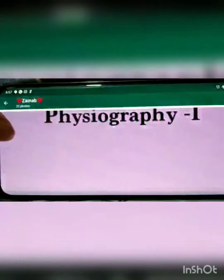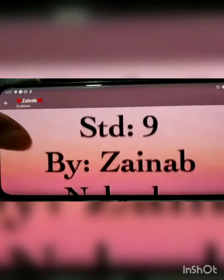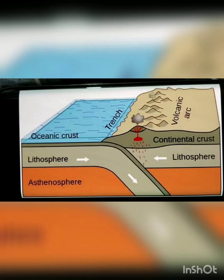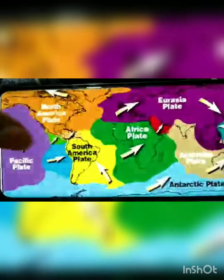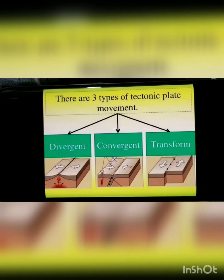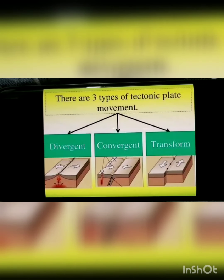The orange part shown is the asthenosphere at the bottom, and it is made up of material over which the crust of the earth floats. There are three types of tectonic plate movements. When the plates are moving away from each other, they are known as divergent plates. When the plates are coming near each other, they are called convergent plates. And when the plates are moving in opposite directions alongside each other, it is known as transform movement.